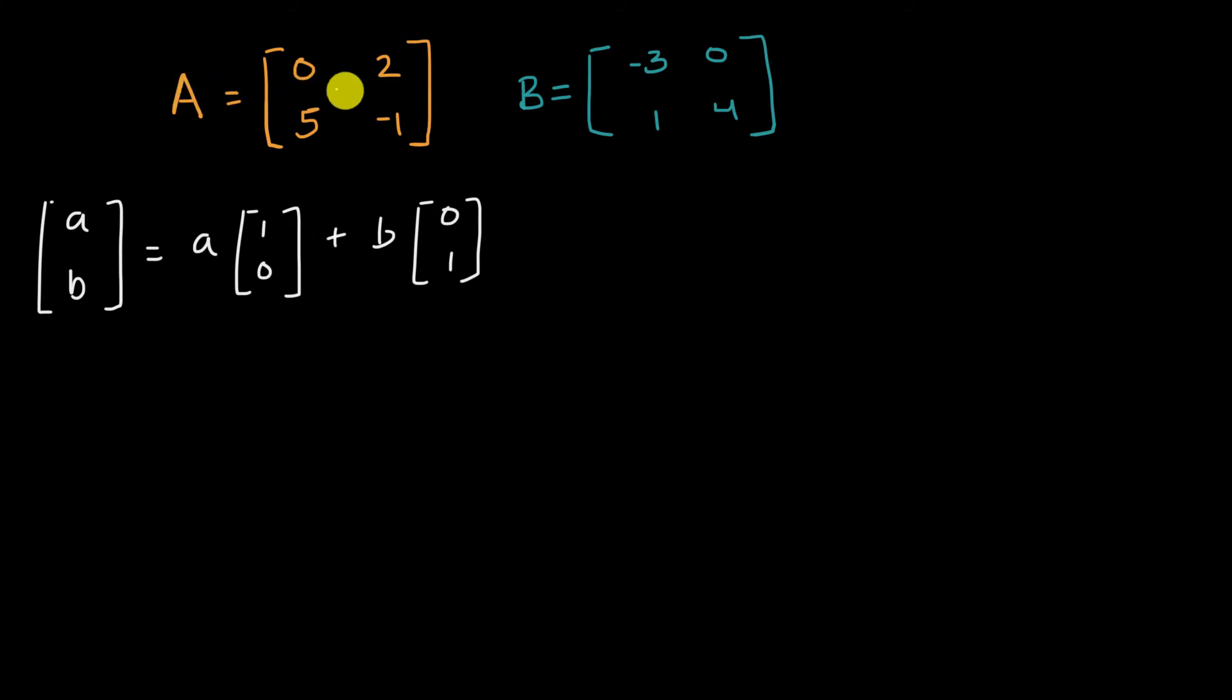Now, if you were to apply this transformation capital A here, it tells you instead of using one zero and zero one, use these two columns instead. So if you were to apply the transformation here, we could call it AB prime, that is going to be A times not one zero, you use zero five instead, and then plus B times not zero one, you use two negative one instead. So that's just a little bit of review.